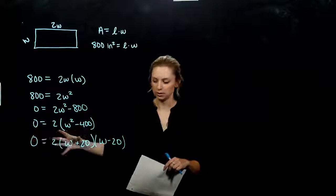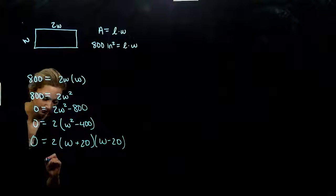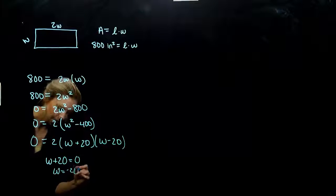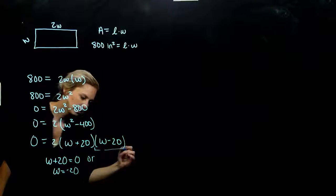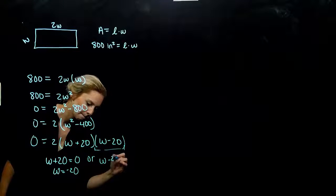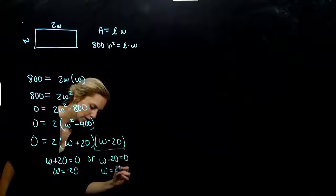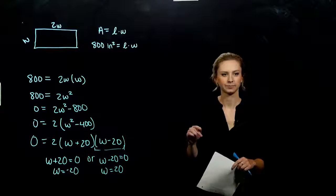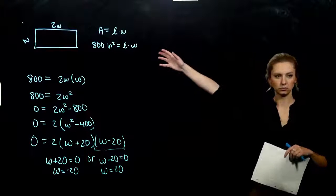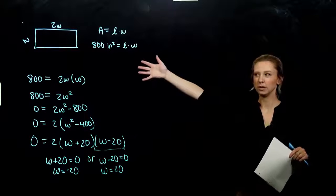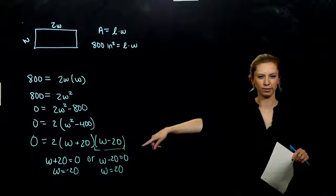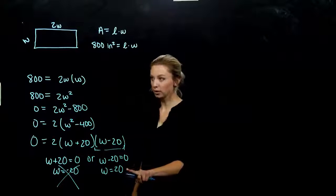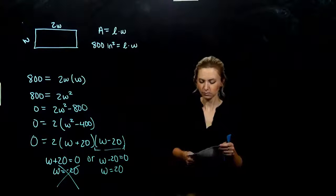With the product equaling zero, either the first piece is zero — giving W = −20 — or the second piece is zero — giving W = 20. When we're looking at a width, it's a practical application problem. Can we ever have negative width? No. So we disregard that answer. The width of this rectangle is 20.